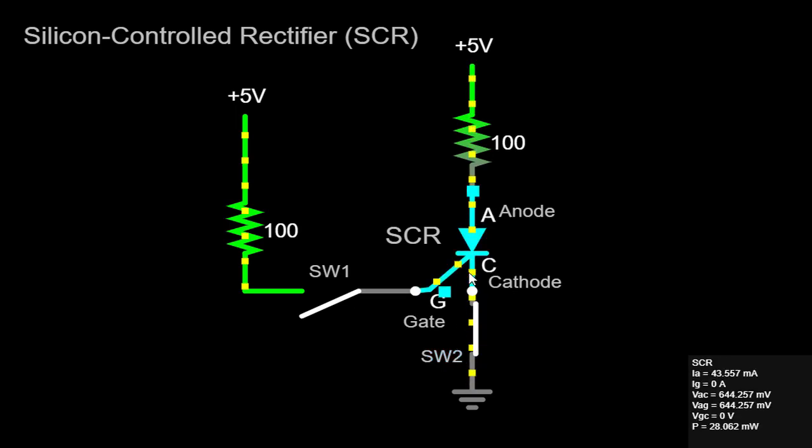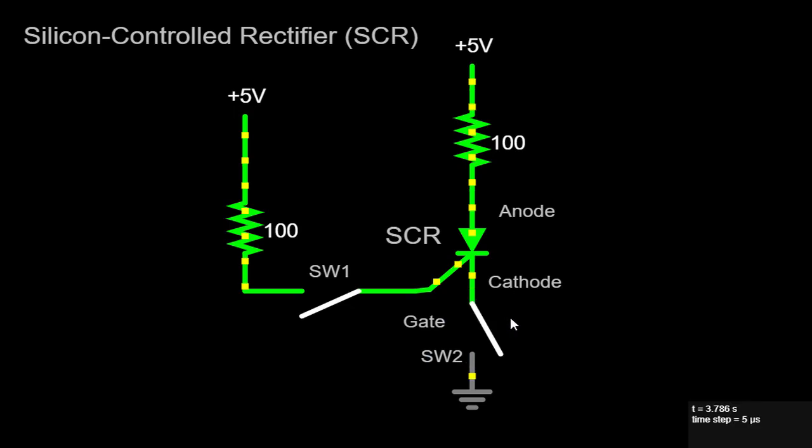Upon powering on the circuit, both SW1 and SW2 are open, meaning that no current flows through the SCR. Consequently, the SCR remains in its off-state, effectively blocking the flow of electricity.